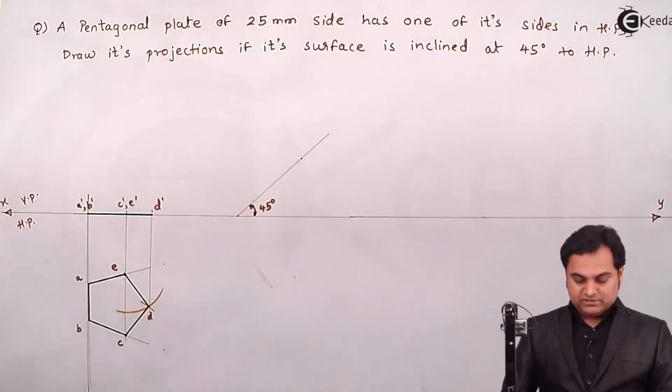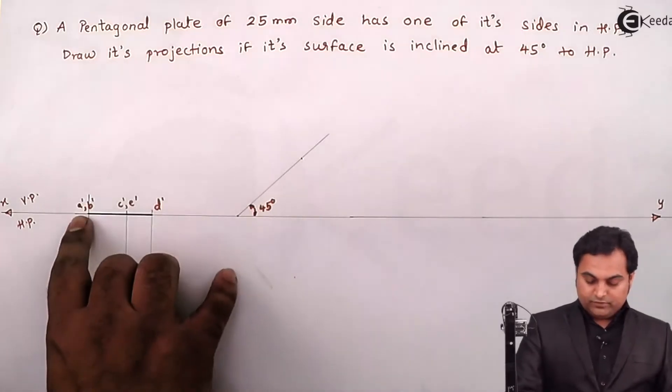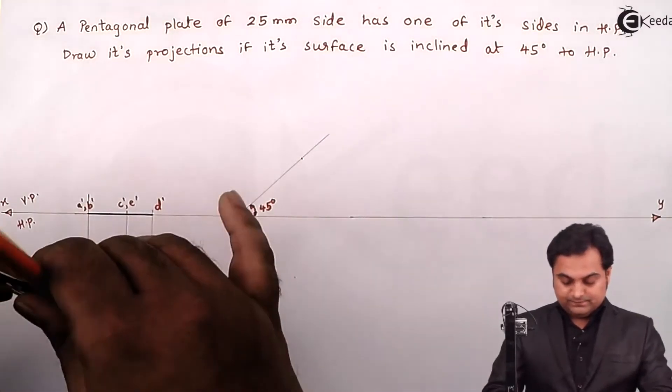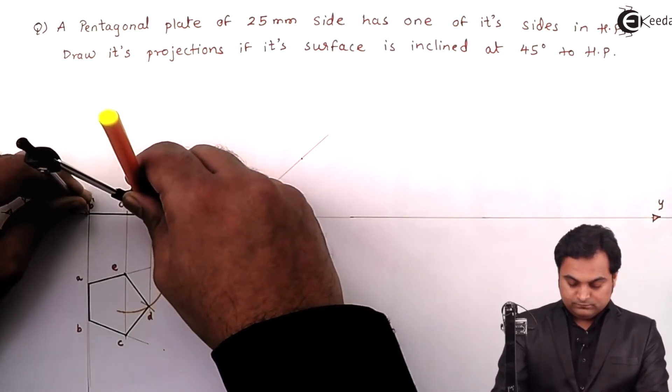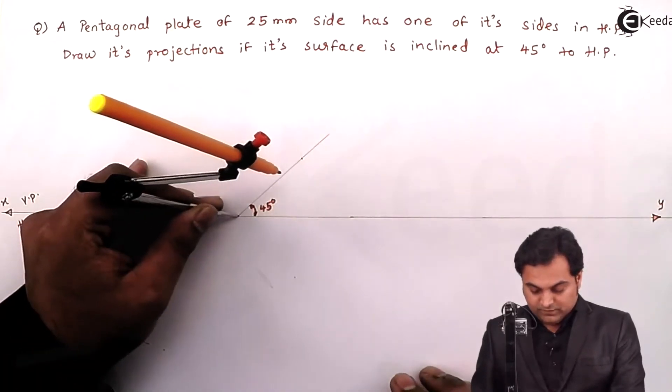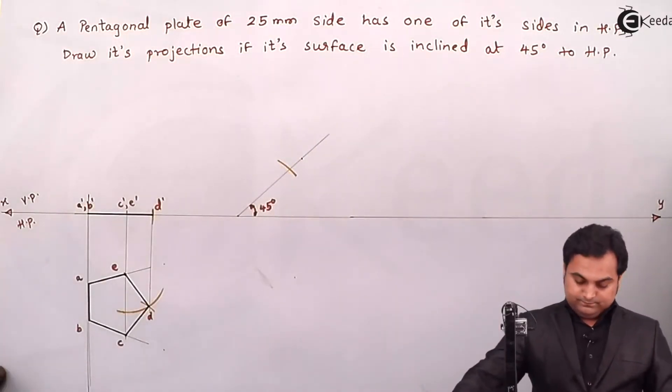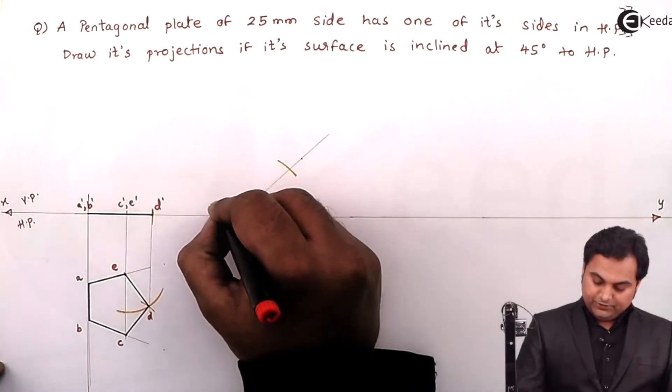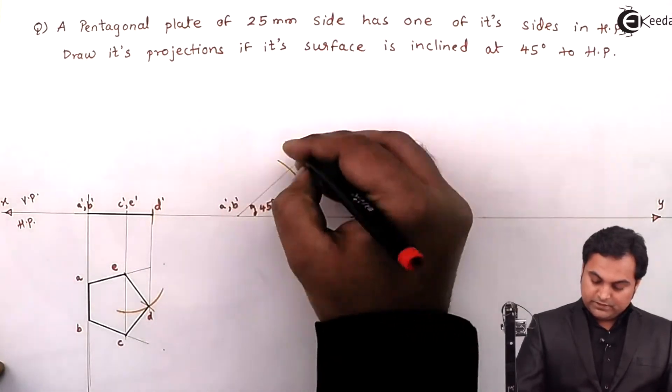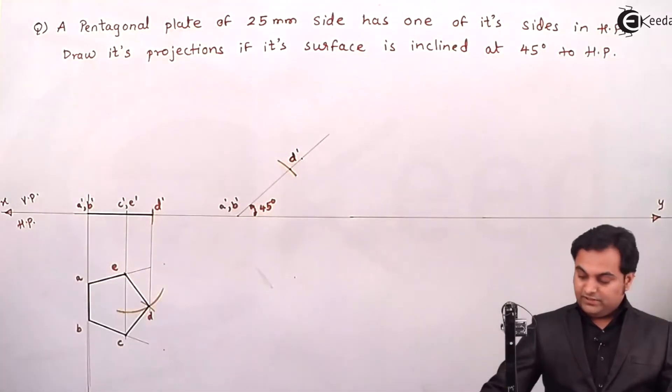Next I'll measure this length of the plane from A'B' to D', keeping it over this point and cutting it here. Here I'm getting the points A'B', this is D'.